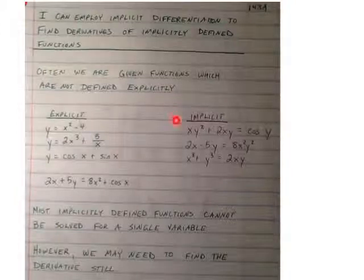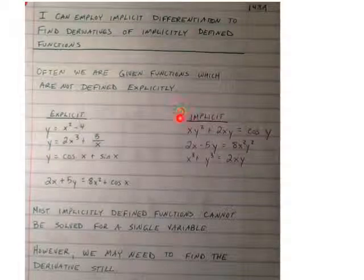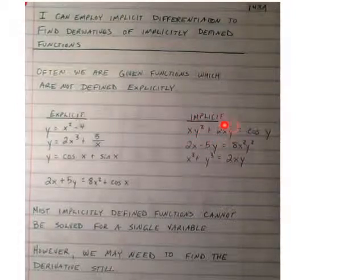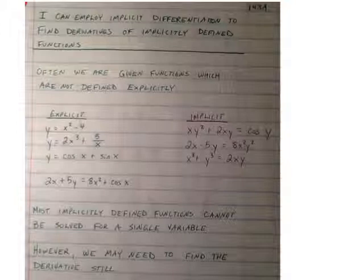However, with an implicit function, often the case is it's not really possible to set the equation up so that it is in y equals format or even x equals format. They are often times convoluted with x's and y's being multiplied and the variables existing on both sides of the equation. And so what we need to do is develop a way to find the derivative of these functions, or these implicitly defined functions.